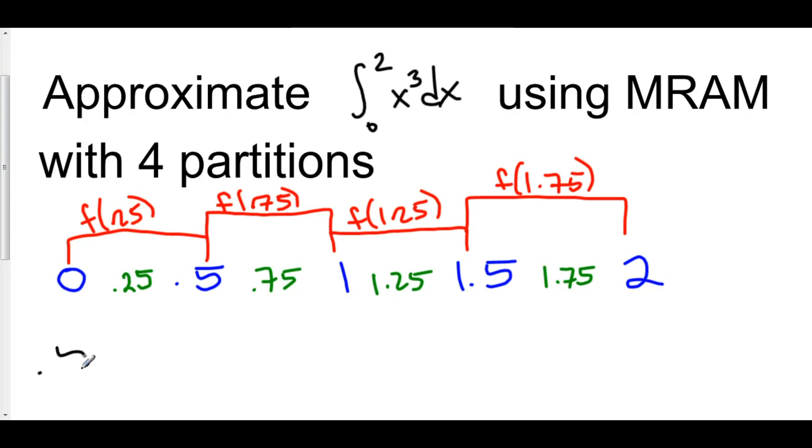And it will always be the same as that initial width that you calculated in the very beginning, times f of 0.25, that's 0.25 cubed, plus f of 0.75, that's 0.75 cubed, plus f of 1.25 cubed, plus f of 1.75 cubed.